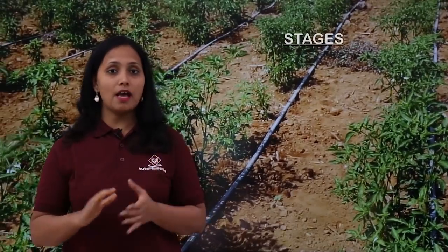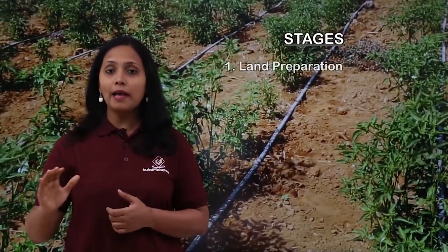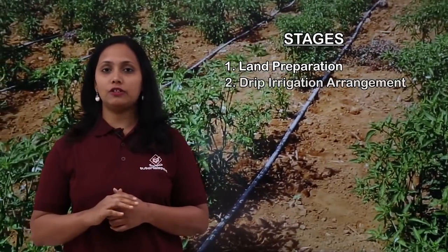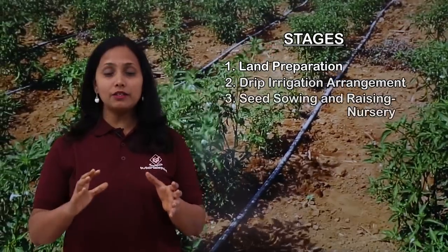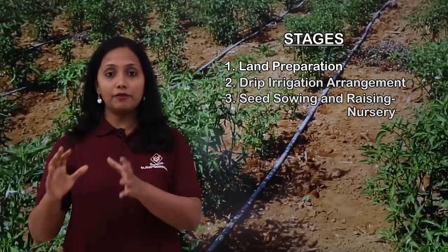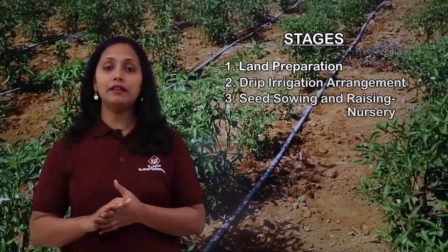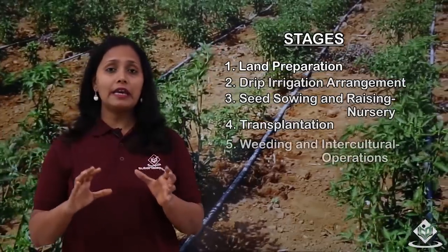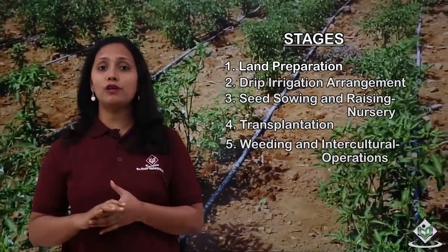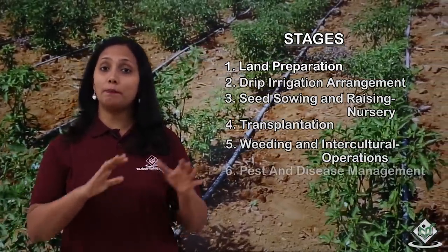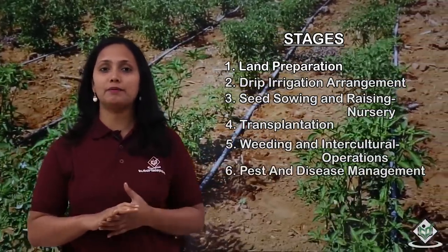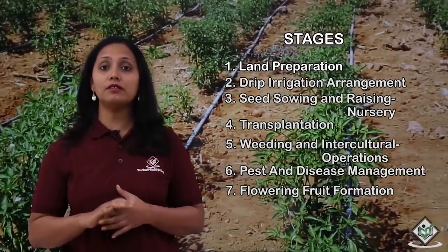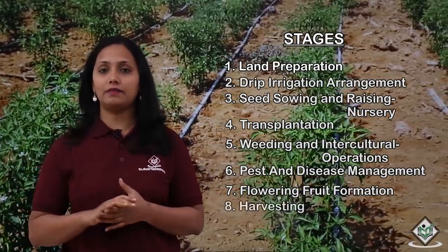Let us now see the stages involved in the cultivation process of chili crop. The stages are: land preparation, drip irrigation arrangement, seed sowing and raising nursery, transplantation, weeding and intercultural operations, pest and disease management, flowering and fruit formation, and harvesting.